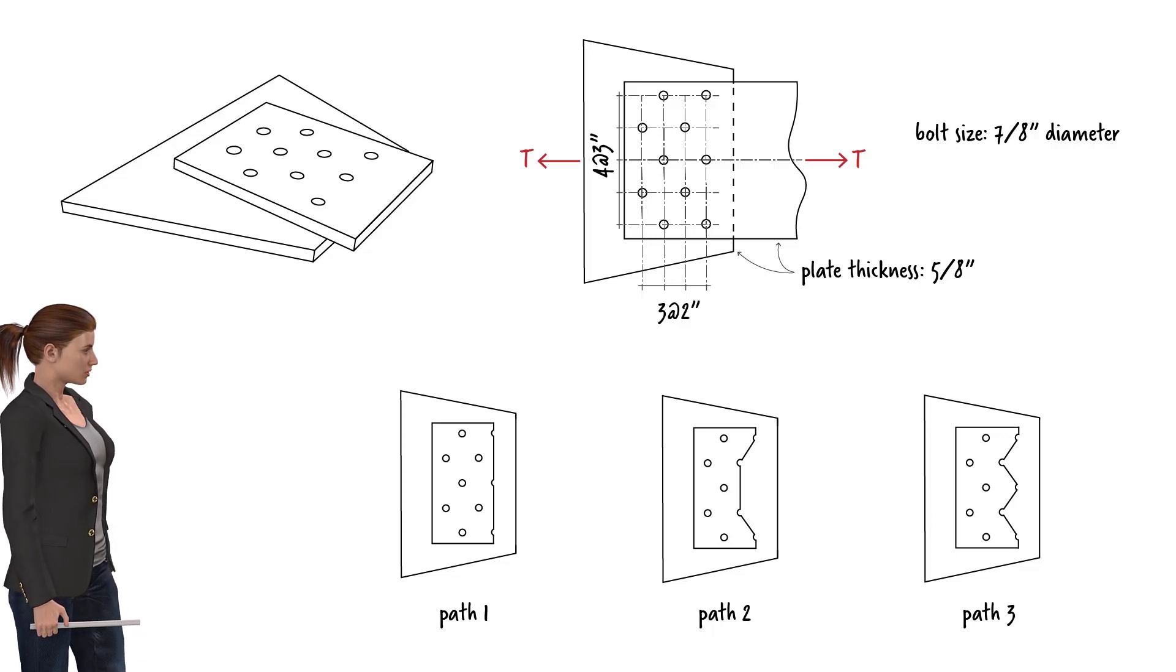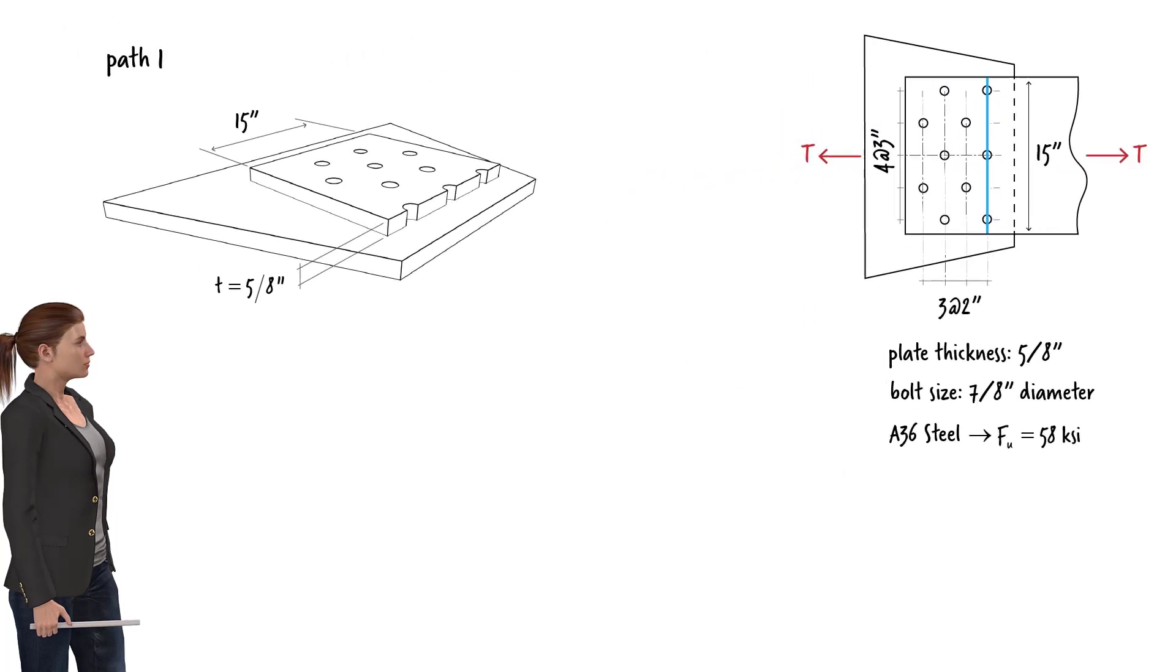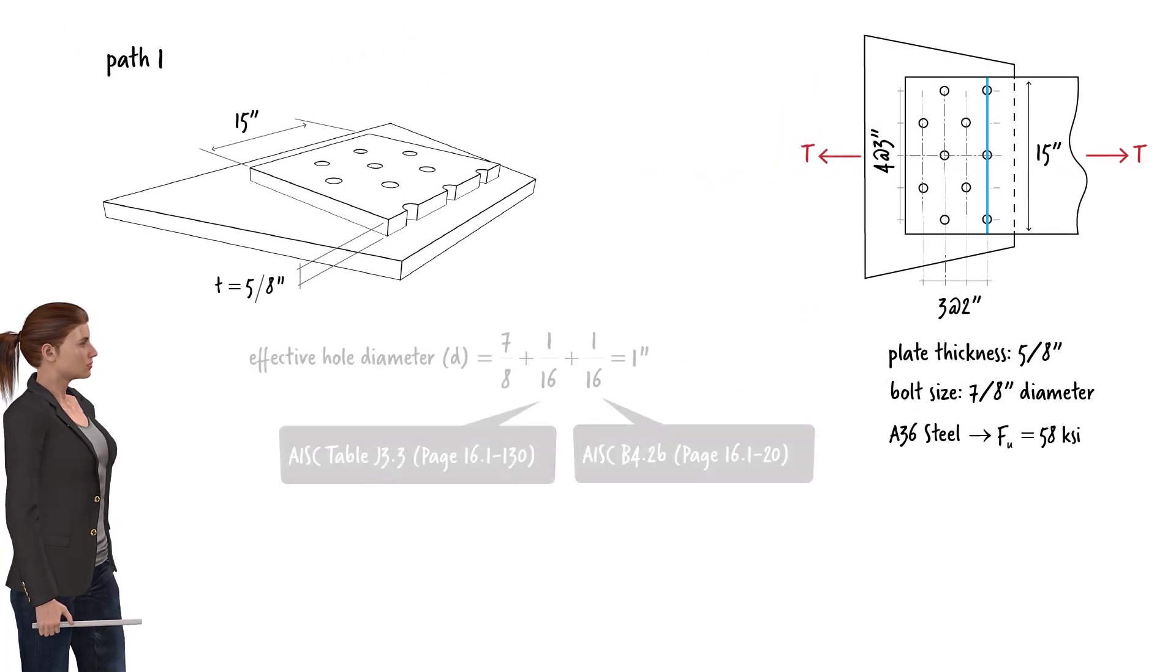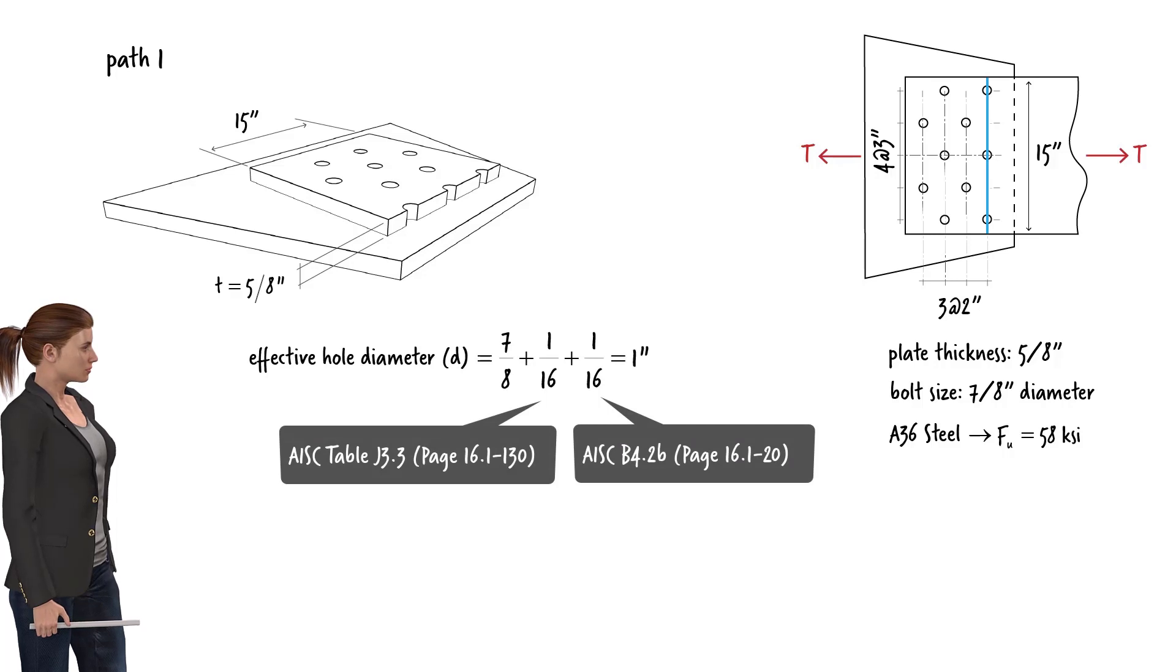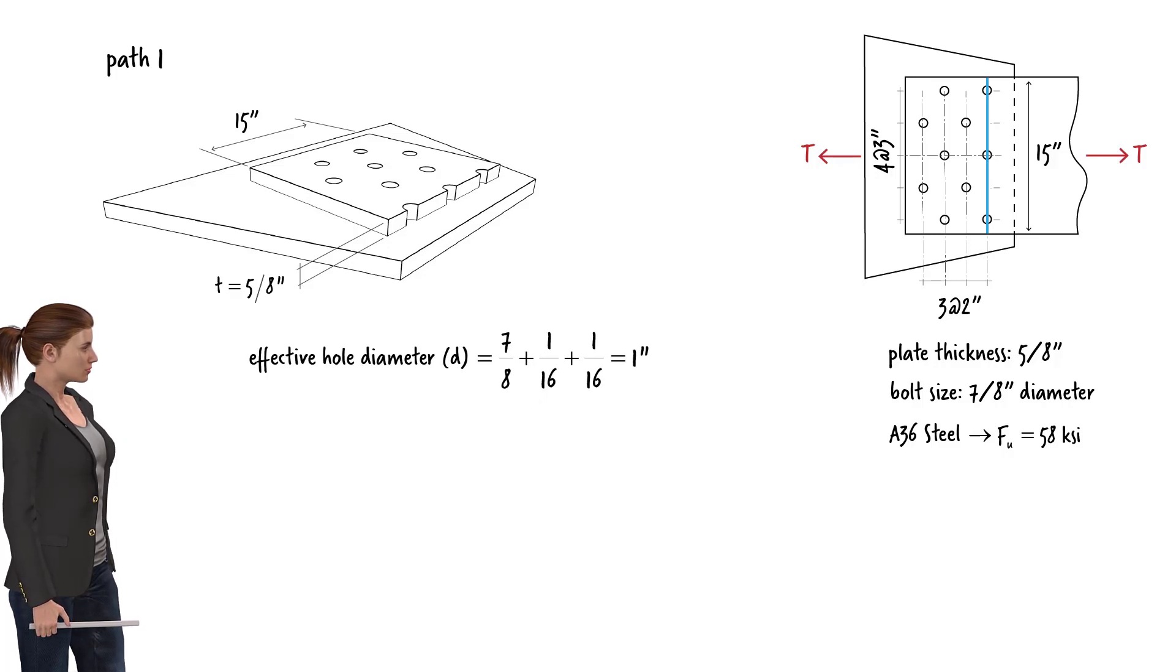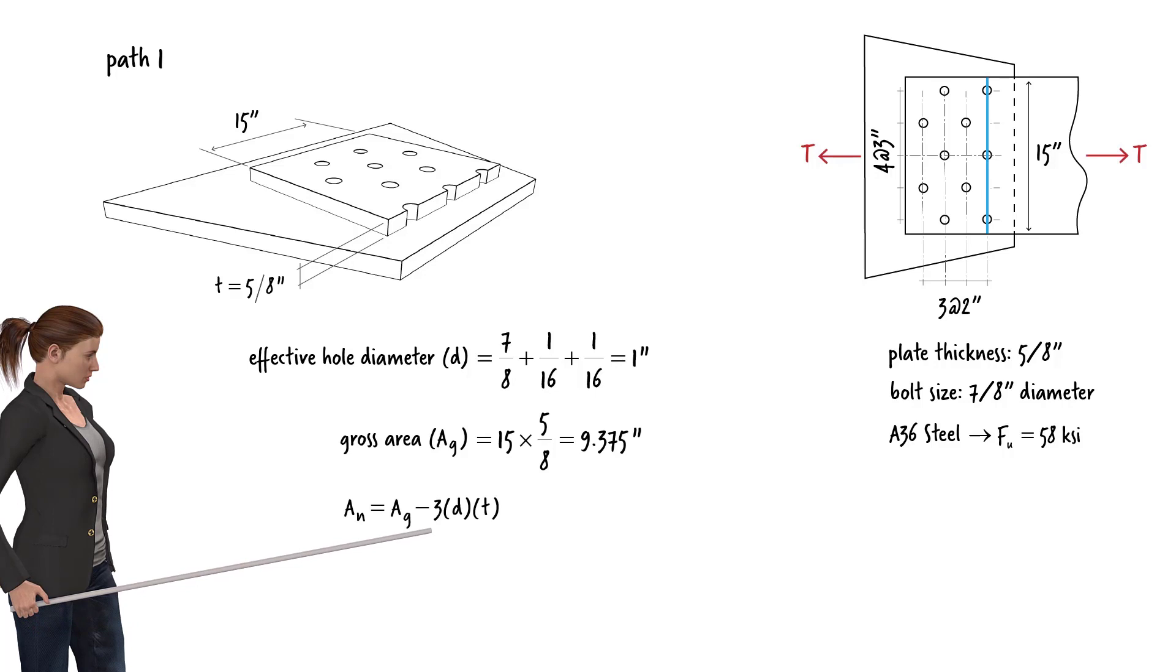Let's calculate the net area for each path. The effective hole diameter is... For path 1, the net area can be expressed as the gross area minus the number of holes – there are three holes along the path – times the hole diameter times the thickness of the plate. The net area equals 7.5 square inches.